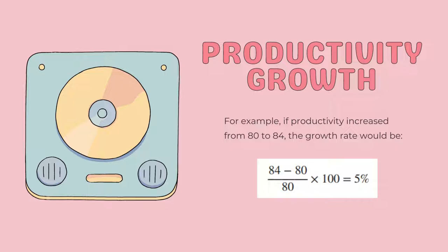For example, if productivity increased from 80 to 84, the growth rate would be computed as: current productivity minus previous productivity, all over previous productivity, times 100. This gives us 84 minus 80, all over 80, times 100. The answer is 5% as the productivity growth for this sample question.